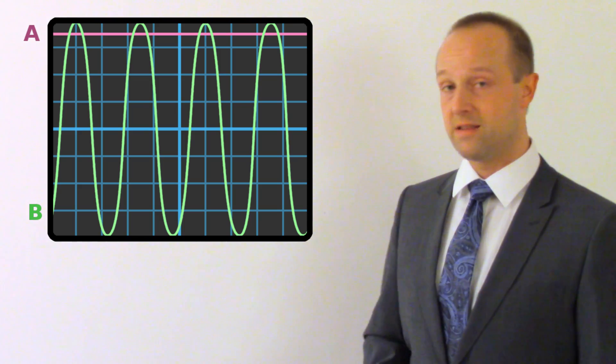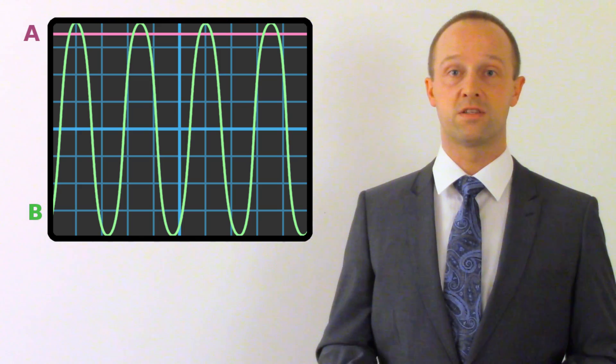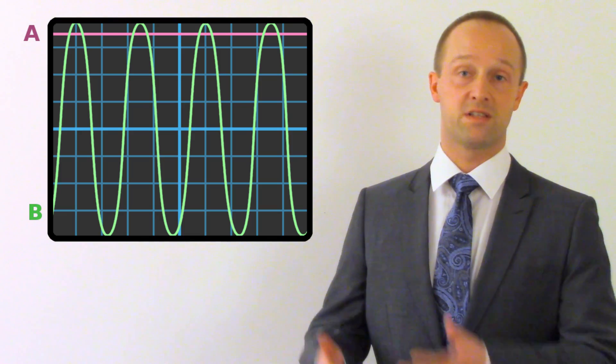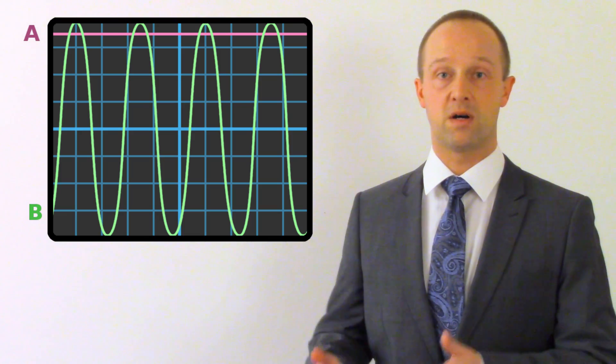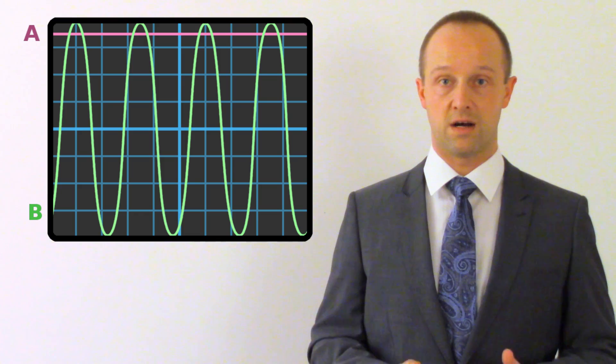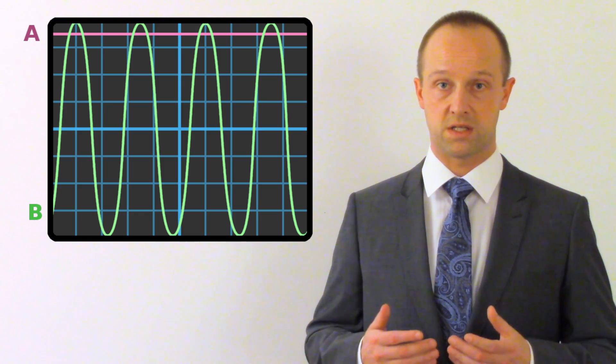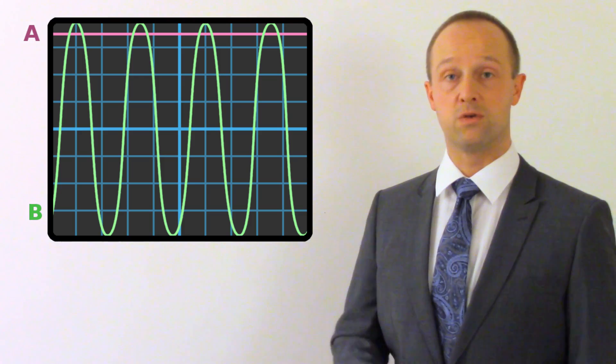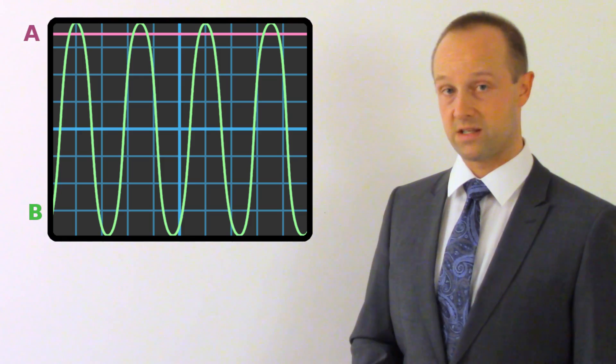Whereas line B, the green line, that is constantly changing. It's positive and then it's negative and then it's positive again. So this one is our alternating current. As it flows back and forth around the circuit, we get a trace which goes positive and negative on the oscilloscope.